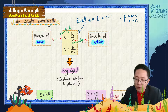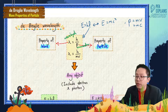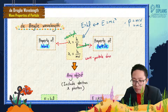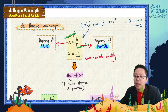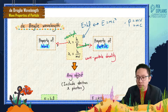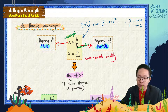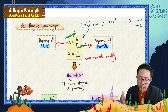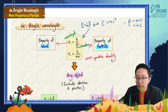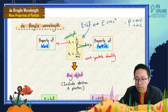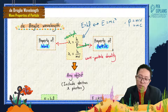So the de Broglie wavelength formula already shows the concept of wave-particle duality. In one formula, it has both wave properties and particle properties — lambda shows the wave property, and momentum shows the particle property.